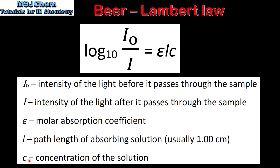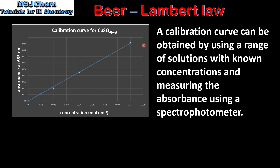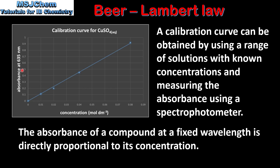Next we look at calibration curves. A calibration curve can be obtained by using a range of solutions with known concentrations and measuring the absorbance using a spectrophotometer. On the y-axis we have the absorbance at a certain wavelength, and on the x-axis we have the concentration. As we can see from this graph, the absorbance of a compound at a fixed wavelength is directly proportional to its concentration.